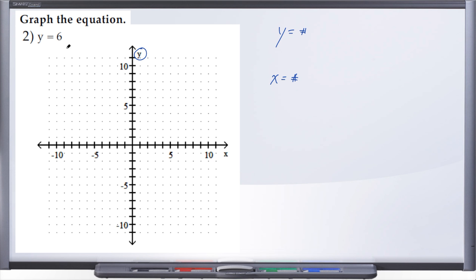And a y equals some number is going to be a horizontal line, and so we will just simply draw a horizontal line through that point.